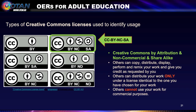The next license is Creative Commons Attribution Non-Commercial Share-Alike, represented by CC BY-NC-SA. Others can copy, distribute, display, perform, and remix your work and give you credit — the five R's are included. Others can distribute your work only under an identical license — that's the share-alike element. Others cannot use your work for commercial purposes. So they must share it under the same license, and they cannot make a profit off your original work or revisions of your work.